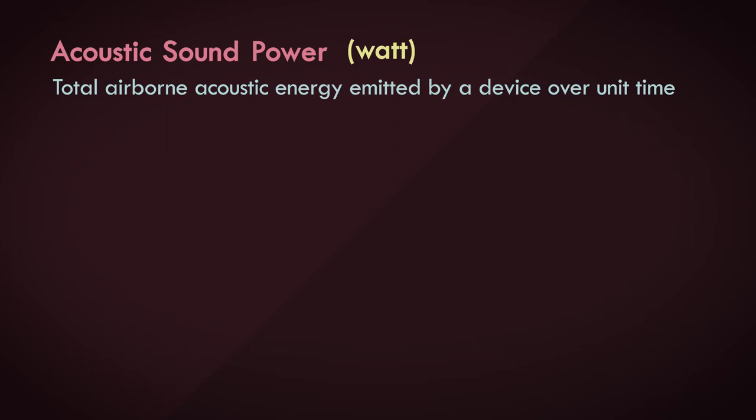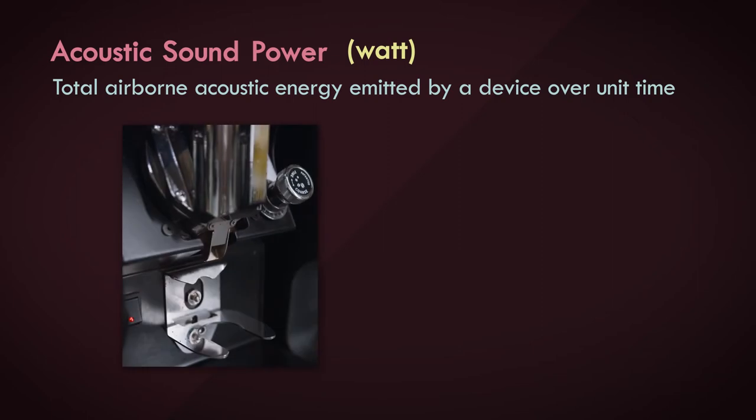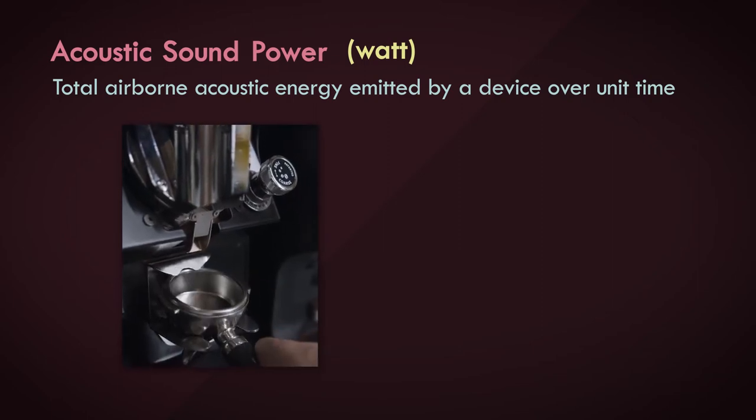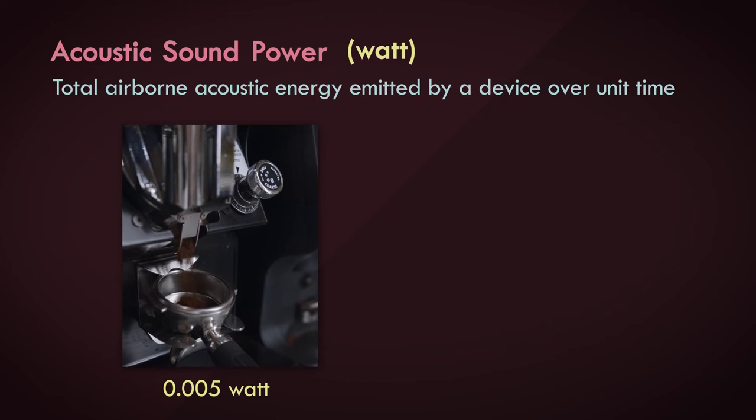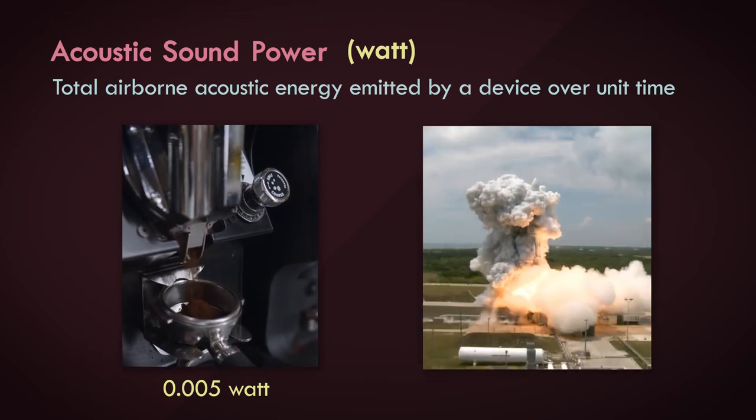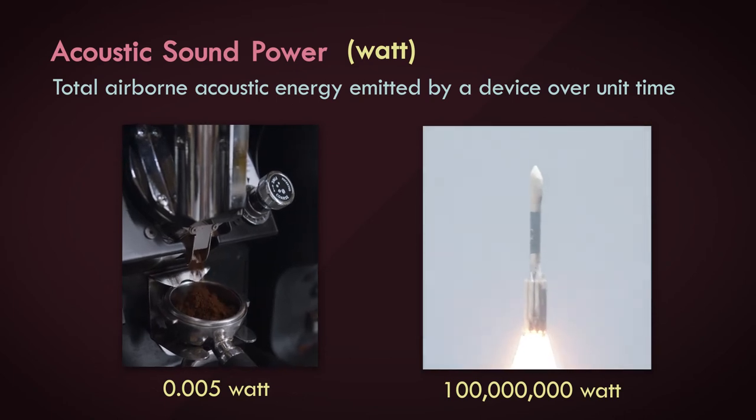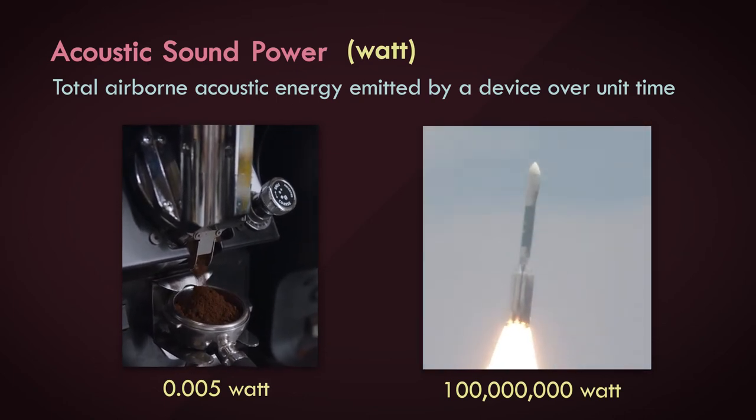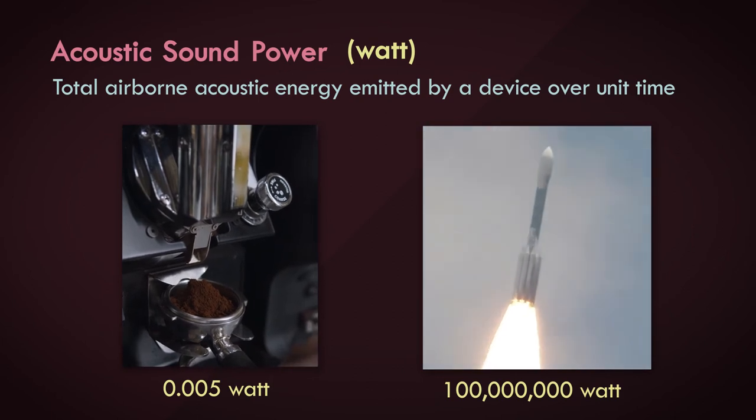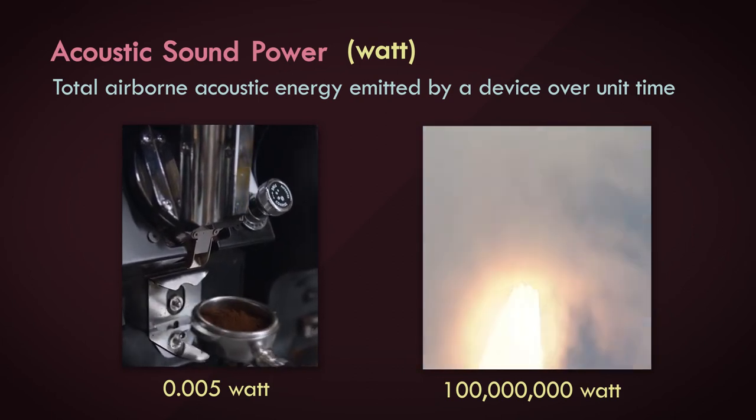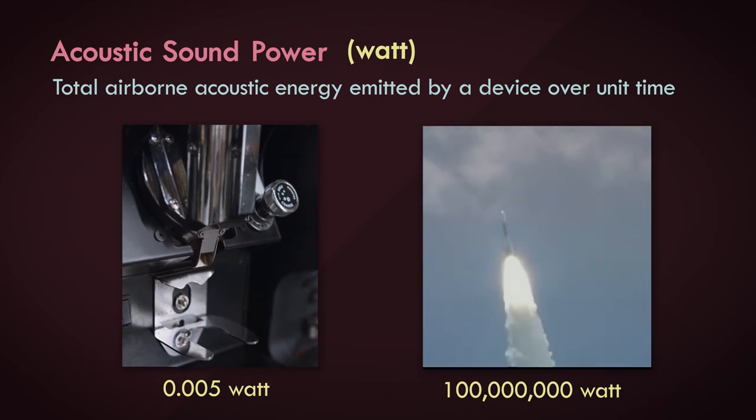Acoustic sound power is the total airborne acoustic energy emitted by a device over unit time. It's measured in watts. Acoustic powers of many devices are quite small. For example, a noisy coffee grinder may only emit about 5 milliwatts of acoustic power. On the other hand, a rocket at takeoff could produce 100 million watts of sound power. The range of values that sound power can take on is massive, so naturally we want to represent these values in a logarithmic scale, or better yet, a decibel scale.